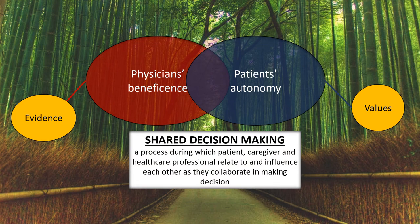Hence, shared decision making is the middle path — balancing both autonomy and physician beneficence. It is a process during which patient, caregiver, and healthcare professionals relate to and influence each other as they collaborate in making a decision. The physician brings the evidence of certain choices — HD, PD, or conservative care — and the patient brings their own values and objectives. We combine this understanding and come up with the appropriate decision.